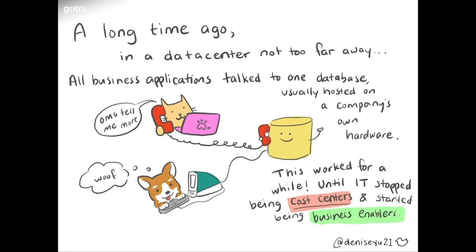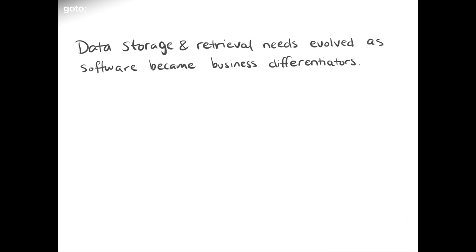It worked because IT was kind of a necessary evil, just a cost center that needed to be funded so the real money-making operations could happen elsewhere. But sometime in the 1990s, computers stopped being just a cost center for many companies and started becoming a business enabler, or even a competitive advantage for some tech companies. So that meant we had to start taking IT a little more seriously. Data storage and the core value for many businesses — then and today — is, of course, customer data.